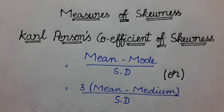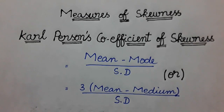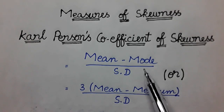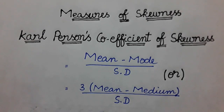Now let's talk about the measure of skewness, that is Karl Pearson's coefficient of skewness. The formula is mean minus mode divided by standard deviation. The alternative formula is 3 times mean minus median divided by standard deviation, where mode or median is used depending on availability.